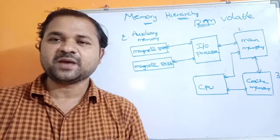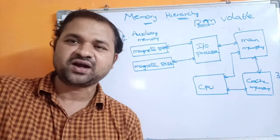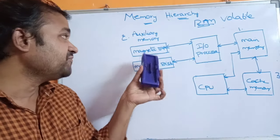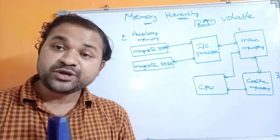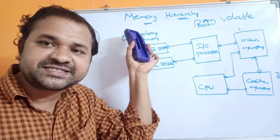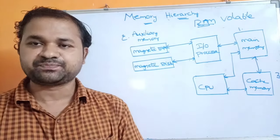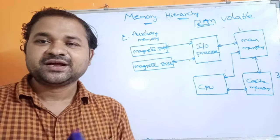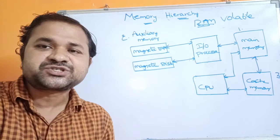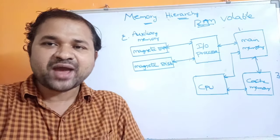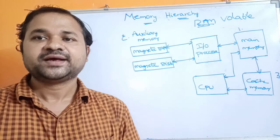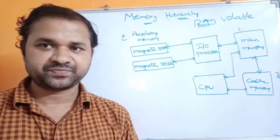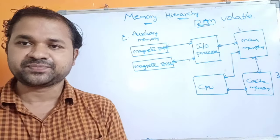If you take any program — whether C, C++, Java, or any other — whenever we save the program, it will be stored in secondary memory. During compilation also, the program resides in secondary memory. But at the time of execution, the operating system or DMA transfers the program from hard disk to main memory, because CPU executes the program only when it resides in main memory.